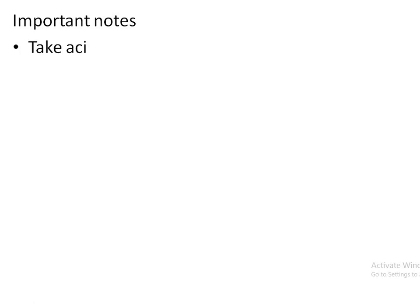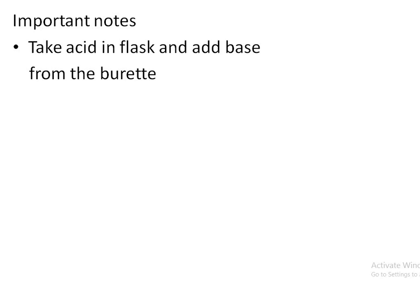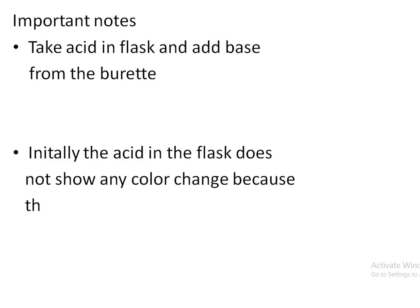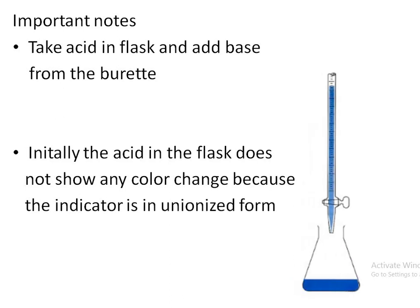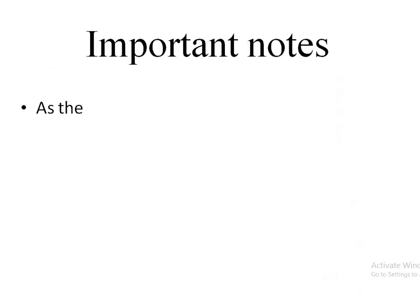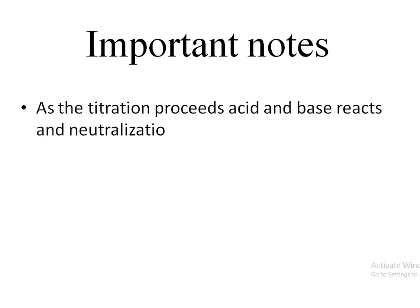Important notes: take acid in the flask and add base from the burette — this is very important. Initially, the acid in the flask does not show any color change because the indicator phenolphthalein is in unionized form. Look at the picture: we are taking sodium hydroxide in the burette and sulfuric acid in the conical flask. As the titration proceeds, acid and base react and a neutralization reaction takes place.